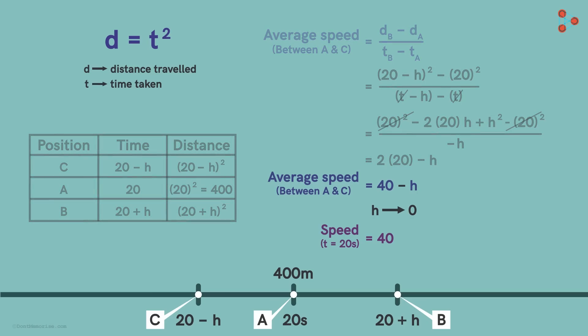Then again, we would get that as h tends to 0, the average speed approaches the number 40. So the speed at this instant is exactly 40 meters per second.